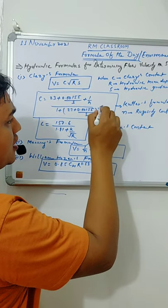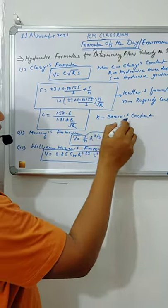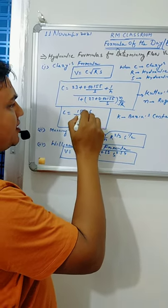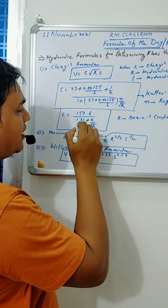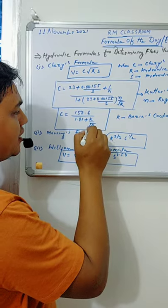According to Bazin's formula, c can be computed by this formula: 157.6 divided by 1.81 plus k divided by square root of r, where k is the Bazin's constant.